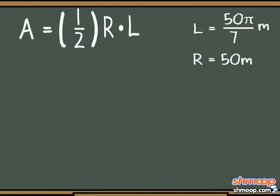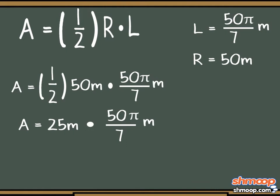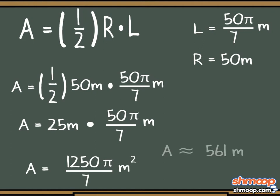Now we can find the area of the sector. One-half times 50 meters times 50π over 7 meters is the same as 25 meters times 50π over 7 meters. This equals 1250π over 7 meters squared, roughly 561 meters squared per sector of the garden.